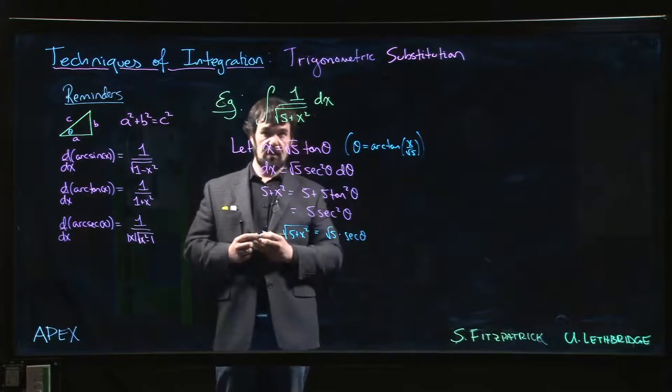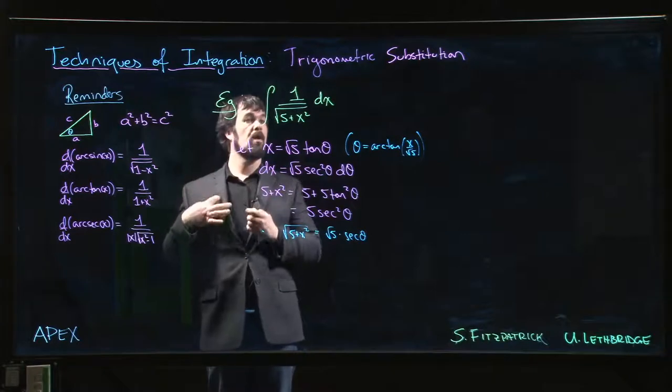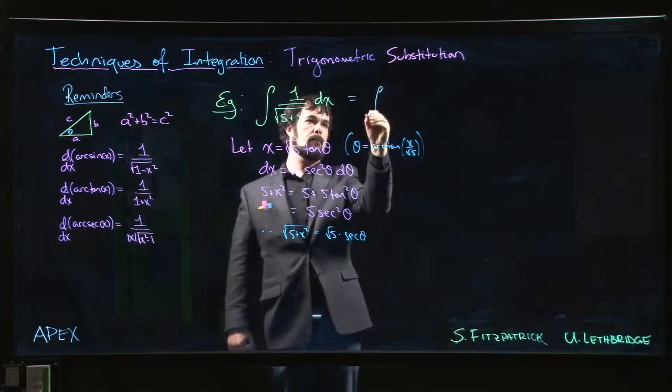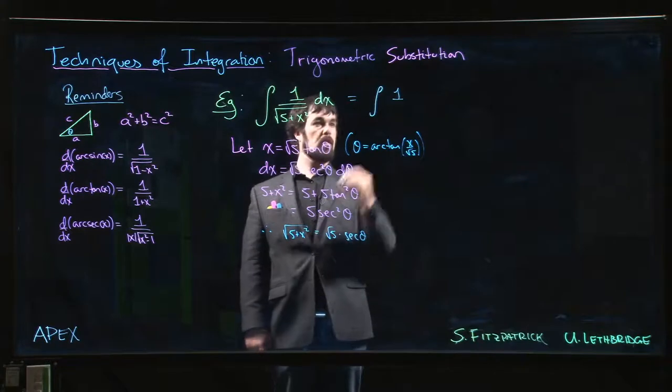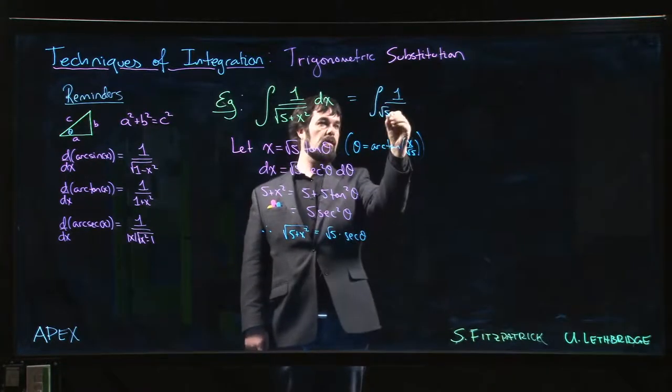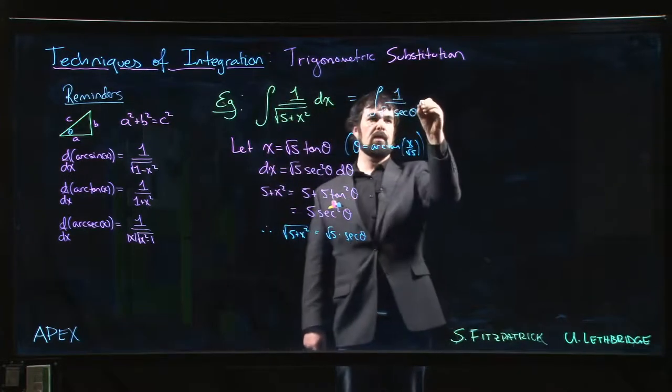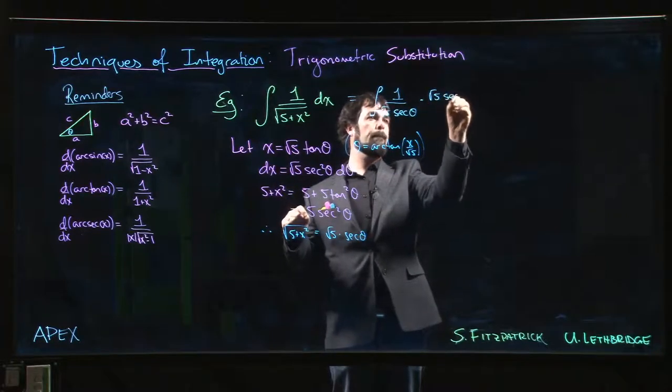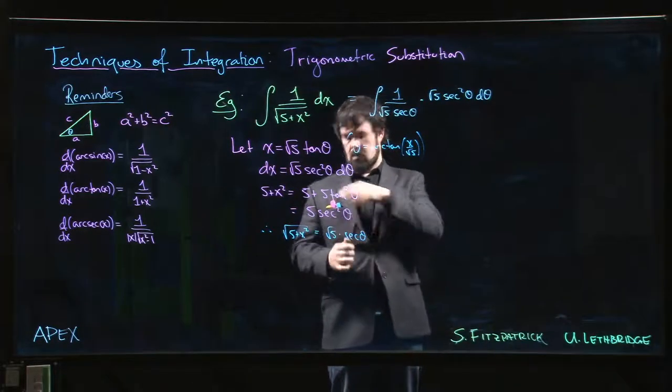...times secant theta. All right, so now we substitute everything in. Okay, so 1 over that square root becomes 1 over root 5 secant theta. dx becomes root 5 secant squared theta d theta. Okay.